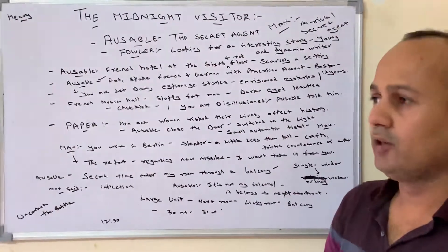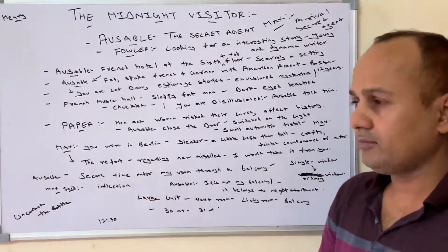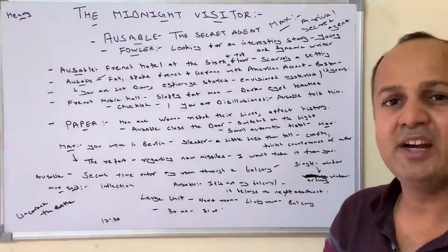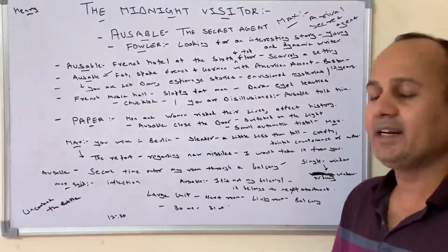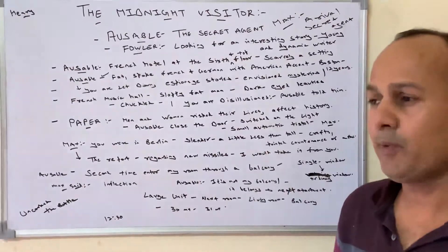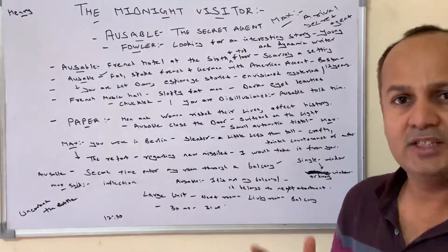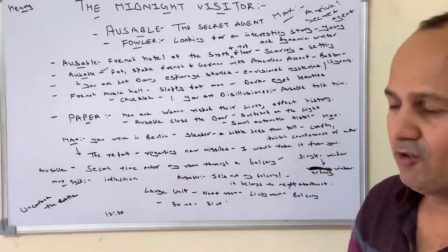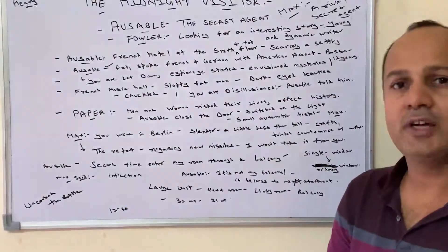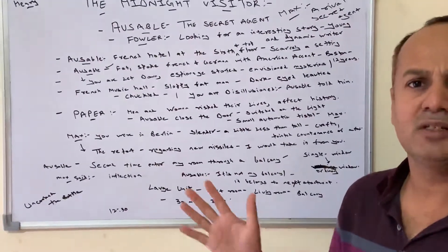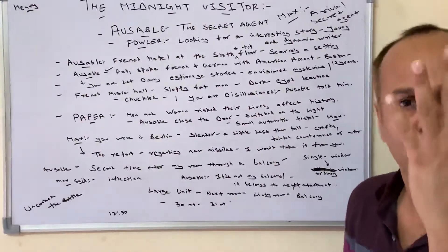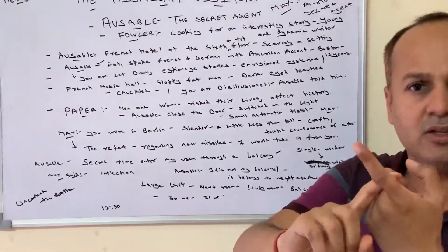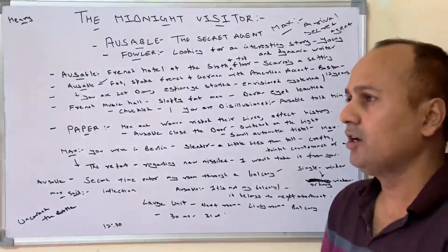The second character is Faller — he is an entertaining kind of person, a young writer who is looking for an interesting story. The third character is Max, another spy who wants to steal a secret paper from Ossival which has all the details of missile technology. The fourth character is Henry, who is mentioned at the end of the chapter. Always remember these four characters: Ossival, Faller, Max, and Henry.